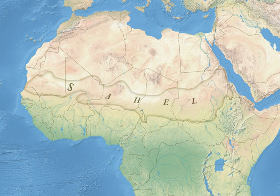The Sahel part of Africa includes parts of northern Senegal, southern Mauritania, central Mali, northern Burkina Faso, the extreme south of Algeria, Niger, the extreme north of Nigeria, central Chad, central and southern Sudan, the extreme north of South Sudan, Eritrea, Cameroon, Central African Republic, and the extreme north of Ethiopia. Historically, the western part of the Sahel was sometimes known as the Sudan region, a belt roughly located between the Sahara and the coastal areas of West Africa.